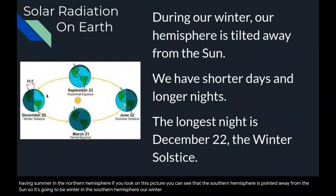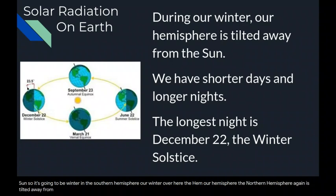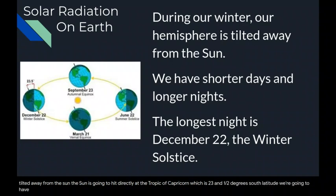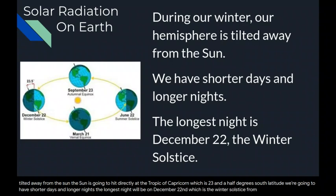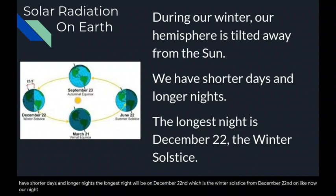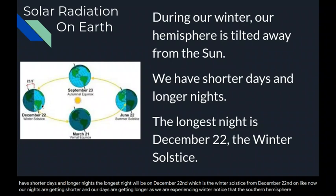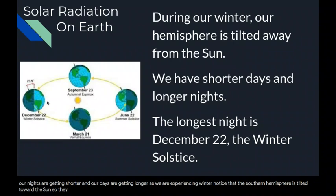During our winter, the northern hemisphere is tilted away from the sun. The sun hits directly at the Tropic of Capricorn, which is 23.5 degrees south latitude. We have shorter days and longer nights. The longest night is on December 22nd — the winter solstice. From December 22nd on, our nights are getting shorter and our days are getting longer. Meanwhile, the southern hemisphere is tilted toward the sun, so they are experiencing their summer.